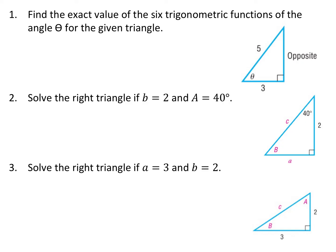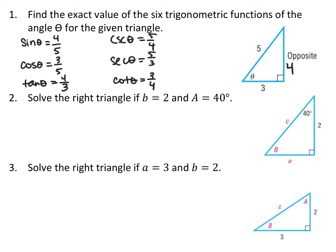For the first triangle, we have a side of 3, a hypotenuse of 5, and angle theta. We want to evaluate all six trig functions for theta. This is a 3-4-5 right triangle, so the opposite side is 4. Sine is opposite over hypotenuse: 4/5. Cosine is adjacent over hypotenuse: 3/5. Tangent is opposite over adjacent: 4/3. Cotangent is the reciprocal: 3/4. Secant is the reciprocal of cosine: 5/3. And cosecant is the reciprocal of sine: 5/4.